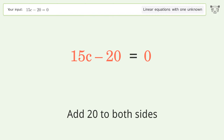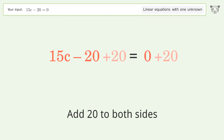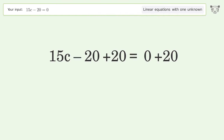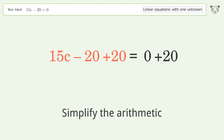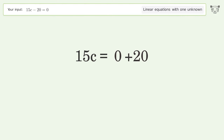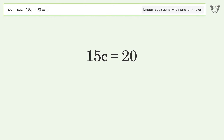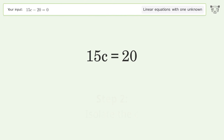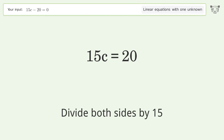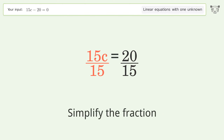Simplify the arithmetic. Then isolate c by dividing both sides by 15, and simplify the fraction.